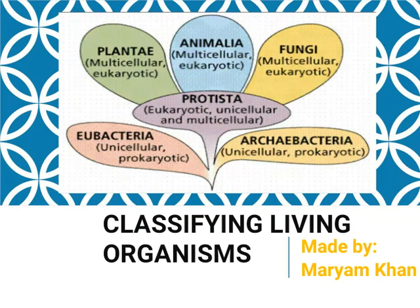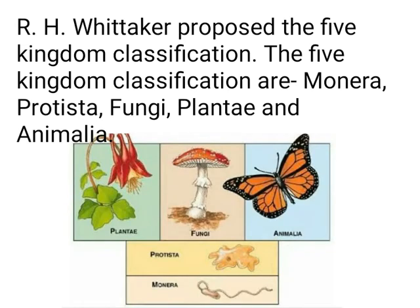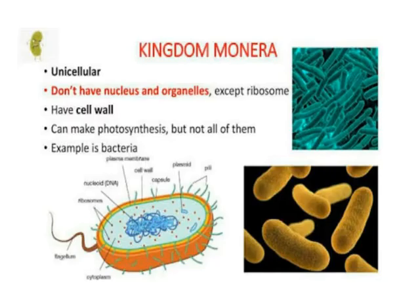Today we are learning about classifying living organisms and how they are classified into different kingdoms. Robert Harding Whittaker proposed the five kingdom classification: Monera, Protista, Fungi, Plantae, and Animalia.